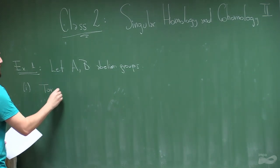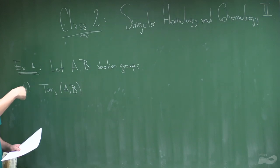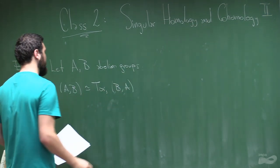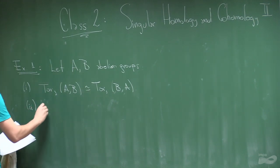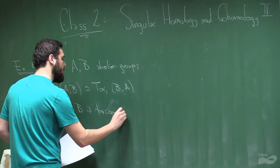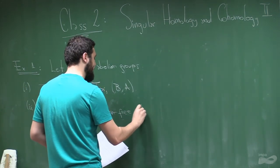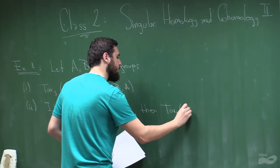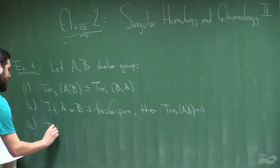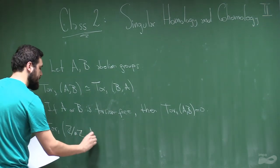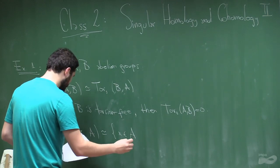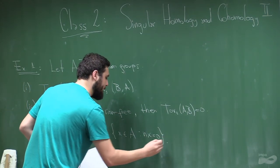The first property — and these are all easy properties that follow just by the definition I gave last class — is that Tor is commutative. Second, if A or B is torsion free, then the Tor is zero. Third, Tor₁ of ℤ/nℤ with A is just the set of n-torsion points of A.